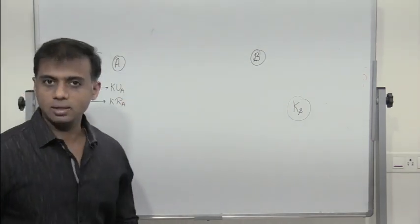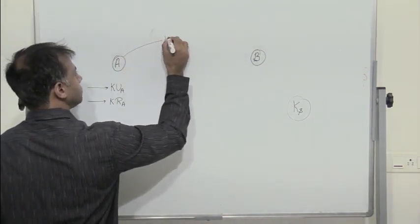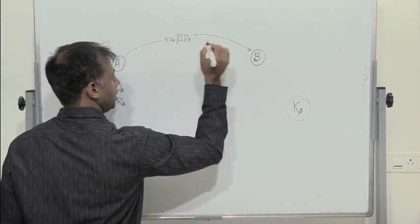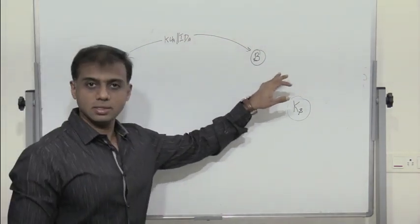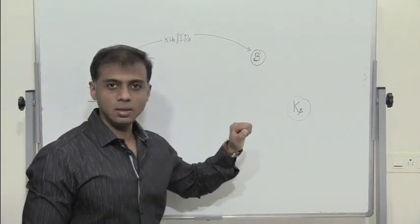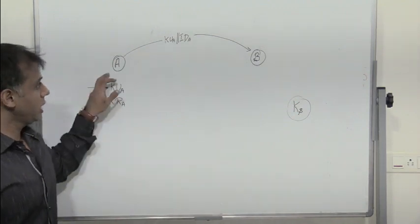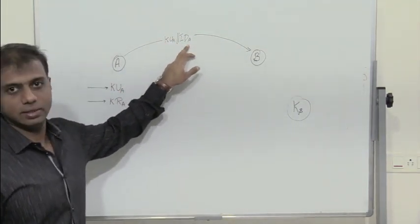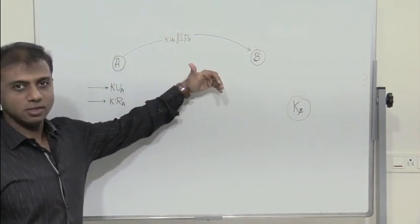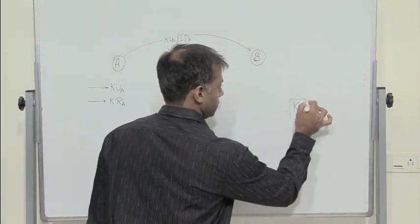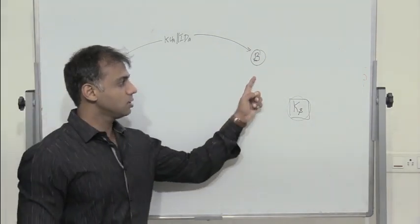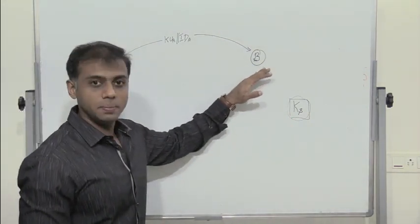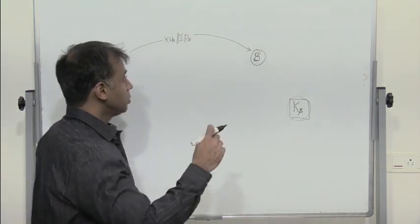A generates a public and private key pair — KUA and KRA. A will now transmit his public key along with his ID to B. B would receive A's public key along with A's ID, which ensures B that the communicator is A. Now B will generate the secret key Ks. In this example we consider user B generating the secret key, though user A could also generate it.